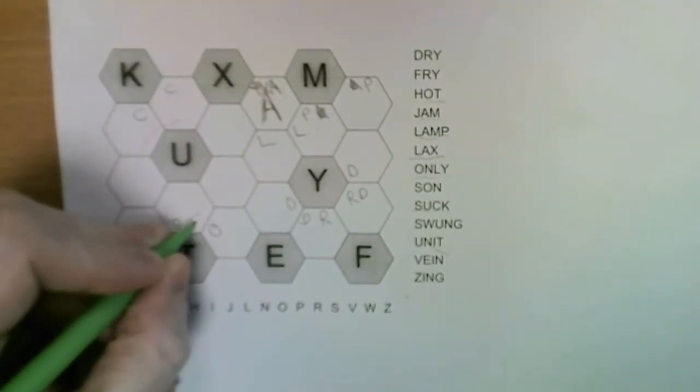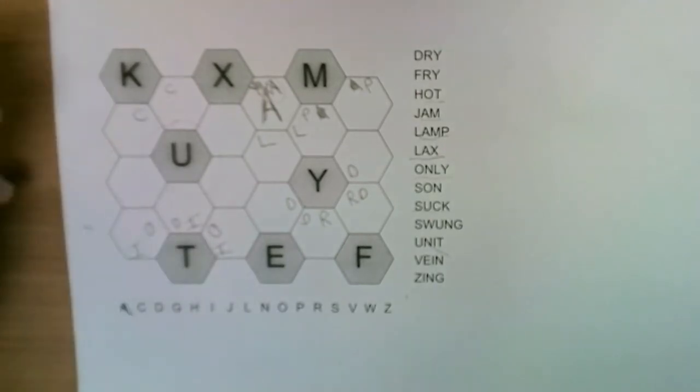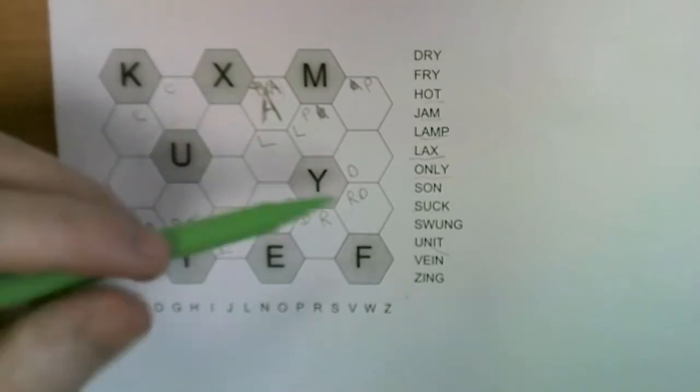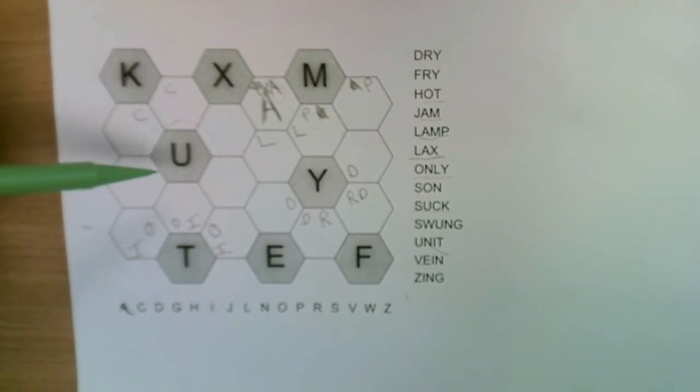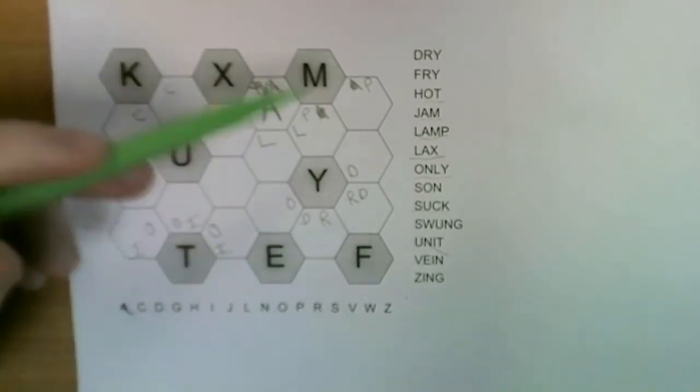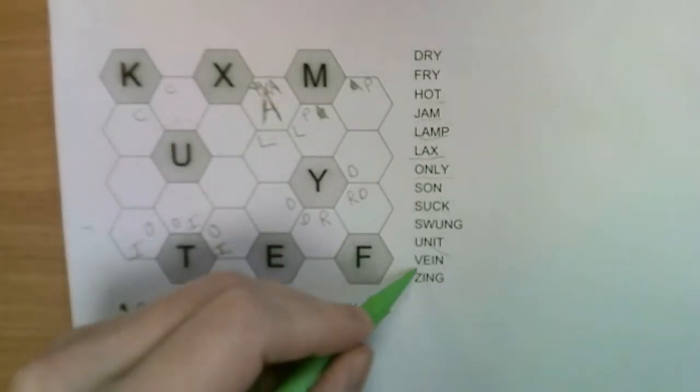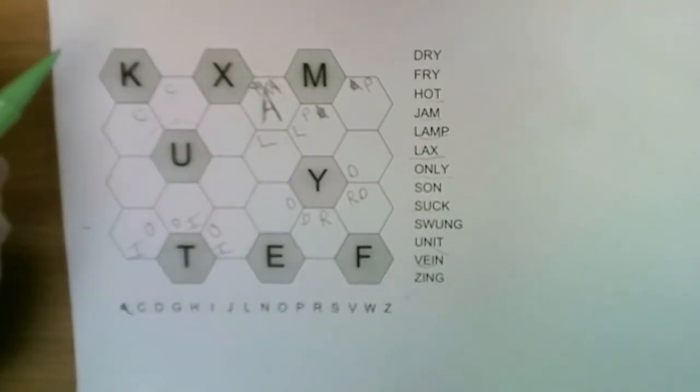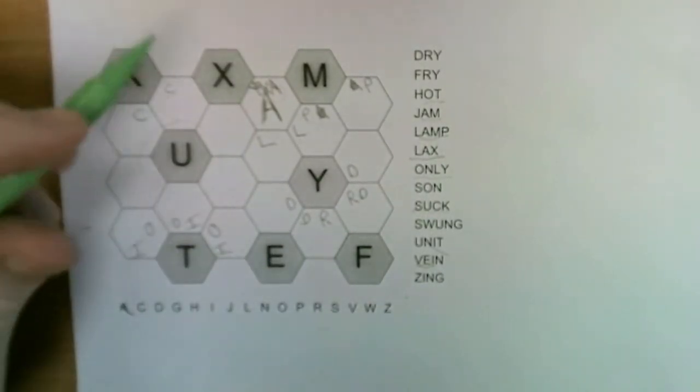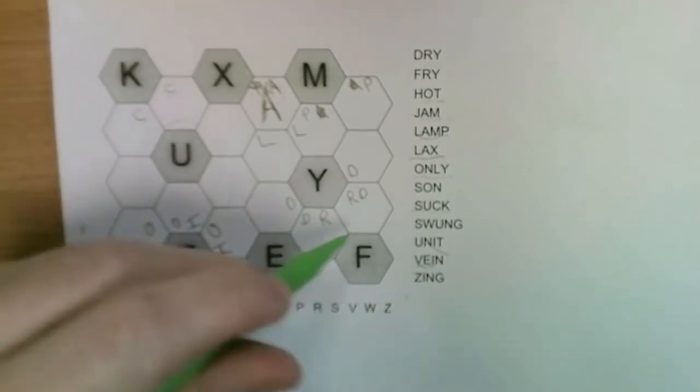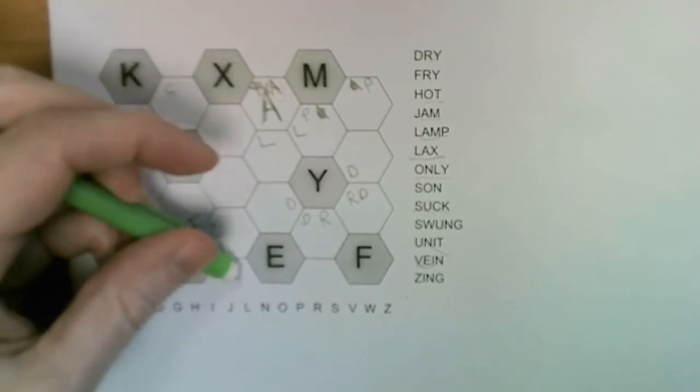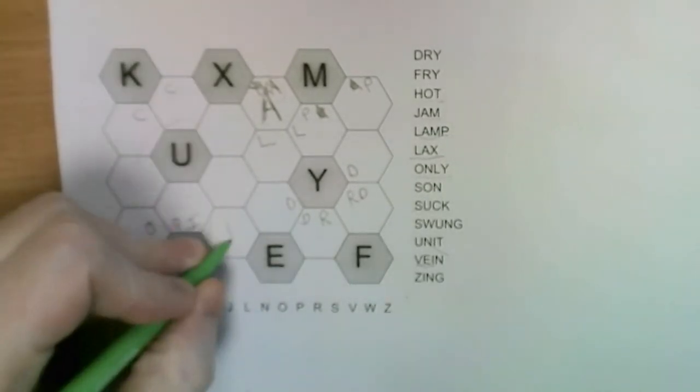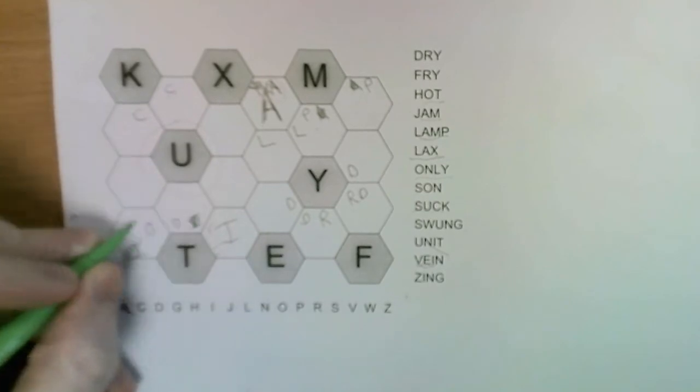Let's look at the E down here. The E neighbors the V and the I. Perfect, we can use the same trick. We know the I goes here or here. If the I also has to neighbor the E, then the only option is this square. So that's our I.